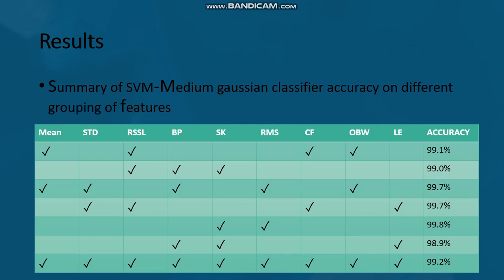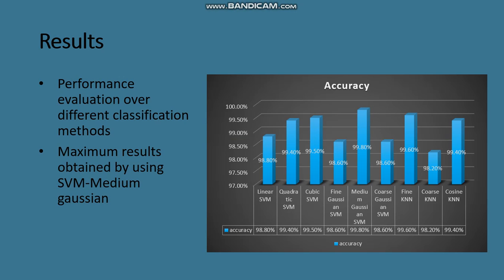For results, this table shows a summary of the SVM medium version classifier accuracy on different groups of features. You can see that using only two features — skewness and root mean square — we achieve the maximum accuracy of 99.8%. The graph shows the performance evaluation of different classification methods, confirming that 99.8% accuracy was achieved using SVM medium Gaussian, which also produced the maximum results.